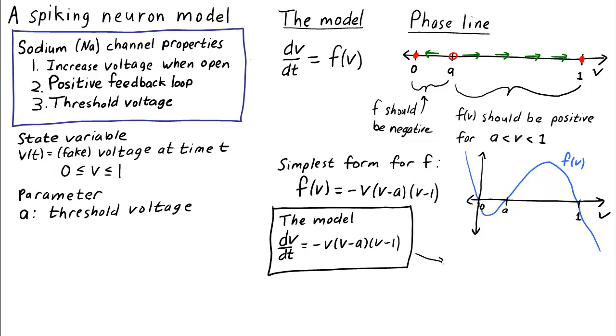For this model, can you verify that the equilibria are 0, A, and 1, and that the equilibria 0 and 1 are stable and the equilibrium V equals A is unstable?